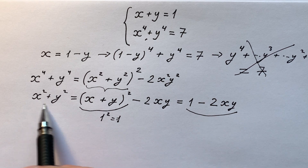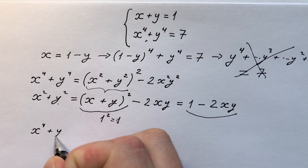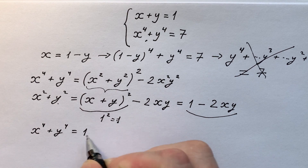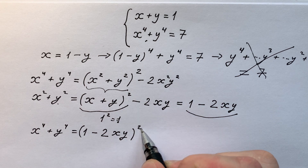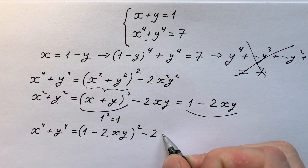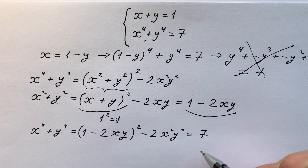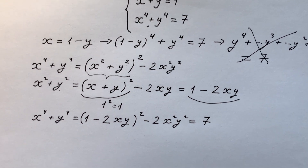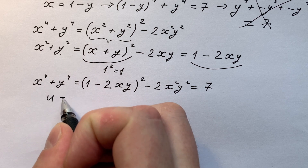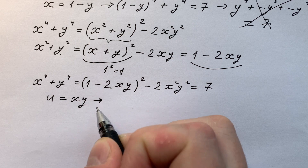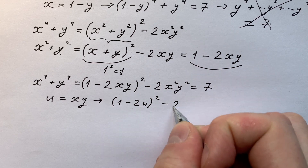Now let's substitute this expression into our equation. We get x⁴ + y⁴ equals (1 minus 2xy)² minus 2x²y², and it equals 7. This last equation looks like a quadratic equation. If we let u equal x times y, we have (1 minus 2u)² minus 2u² equals 7.